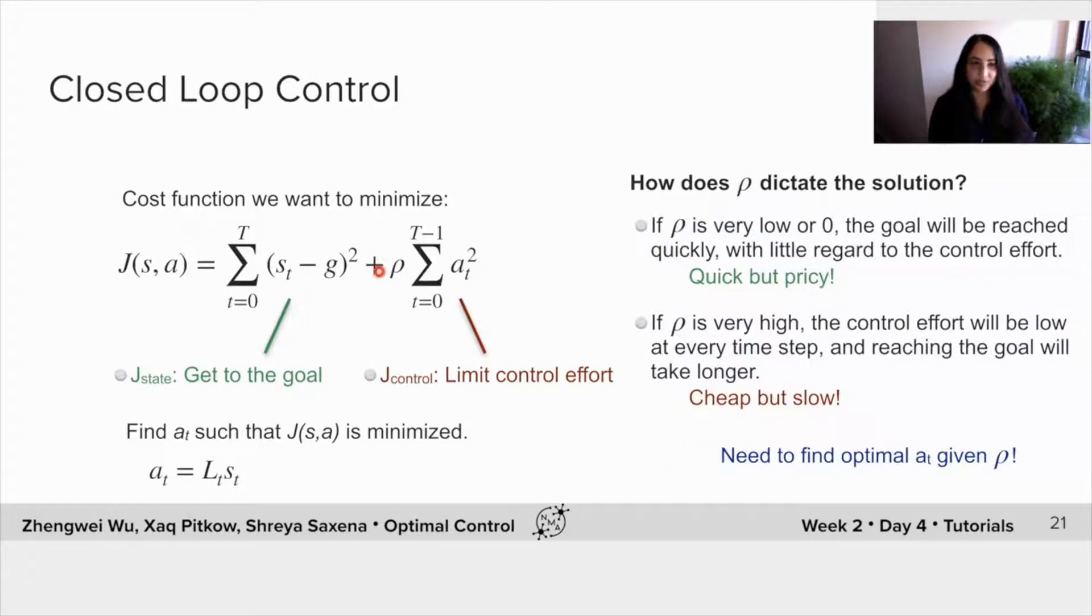So just to talk a little bit more about this rho. How does rho actually dictate the solution? So if rho is very low, or zero, this was the case that we were looking at in exercise one. All we cared about was getting to the goal quickly. And so for zero, we will get to the goal as quickly as possible, but just with little regard to the control effort. The control effort is allowed to grow as large as possible. This is quick, but maybe pricey in terms of the control effort cost.